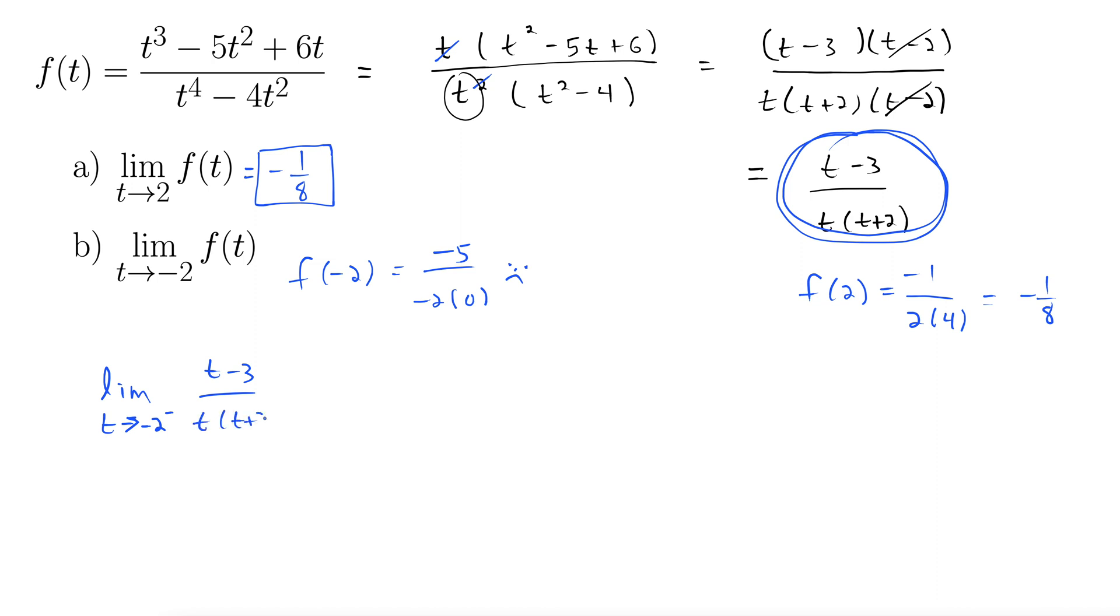And we know that this limit is either going to be plus infinity or minus infinity. We just need to figure out which one. So a nice approach to this is to just examine the point negative 2 here on the line. As we come in from the left, we can essentially just pick a point very close to negative 2.